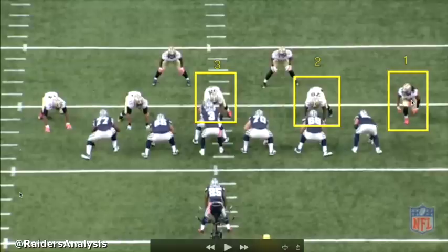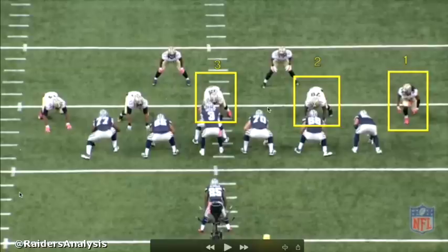If the outside linebacker goes outside and gives him the inside lane, the running back is going to look to his next read, which is the defensive end. He's going to make a similar read, and if the defensive end gives him the inside, then he's going to look to his next read, and so on.